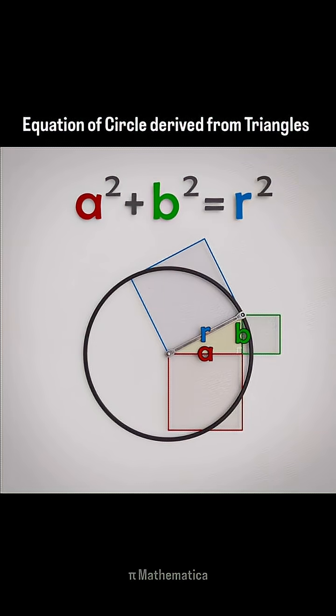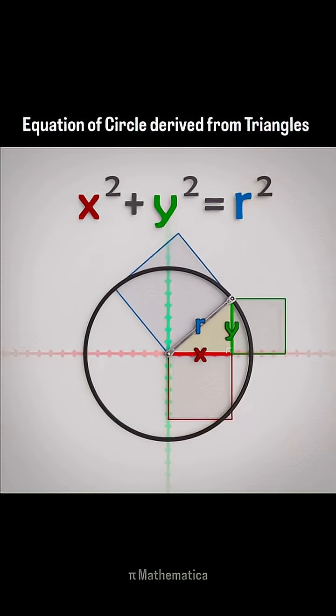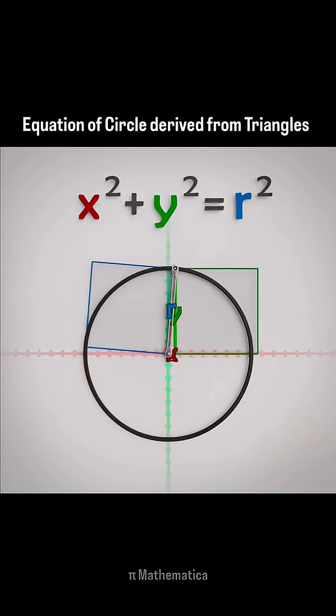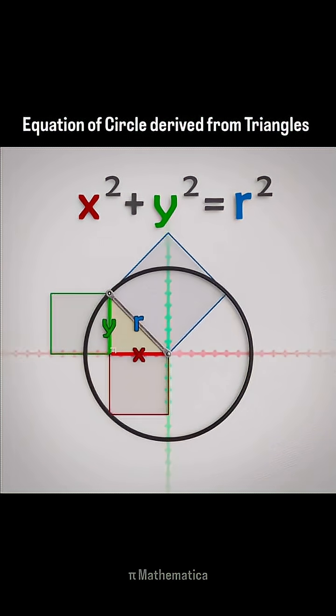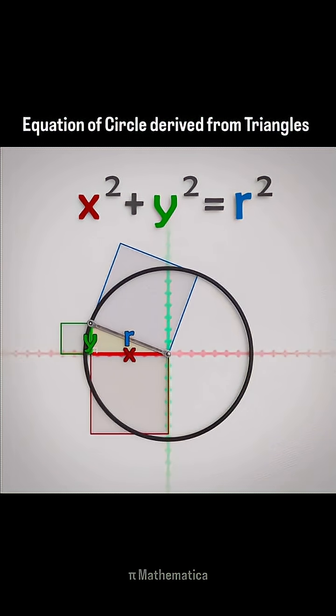And if we think about this in terms of a grid of Cartesian coordinates, the triangle legs define the position of the points on the circle left to right along the x-axis, and up and down along the y-axis. For every point on a circle, the coordinates in x and y will relate to the radius of the circle with the Pythagorean Theorem.